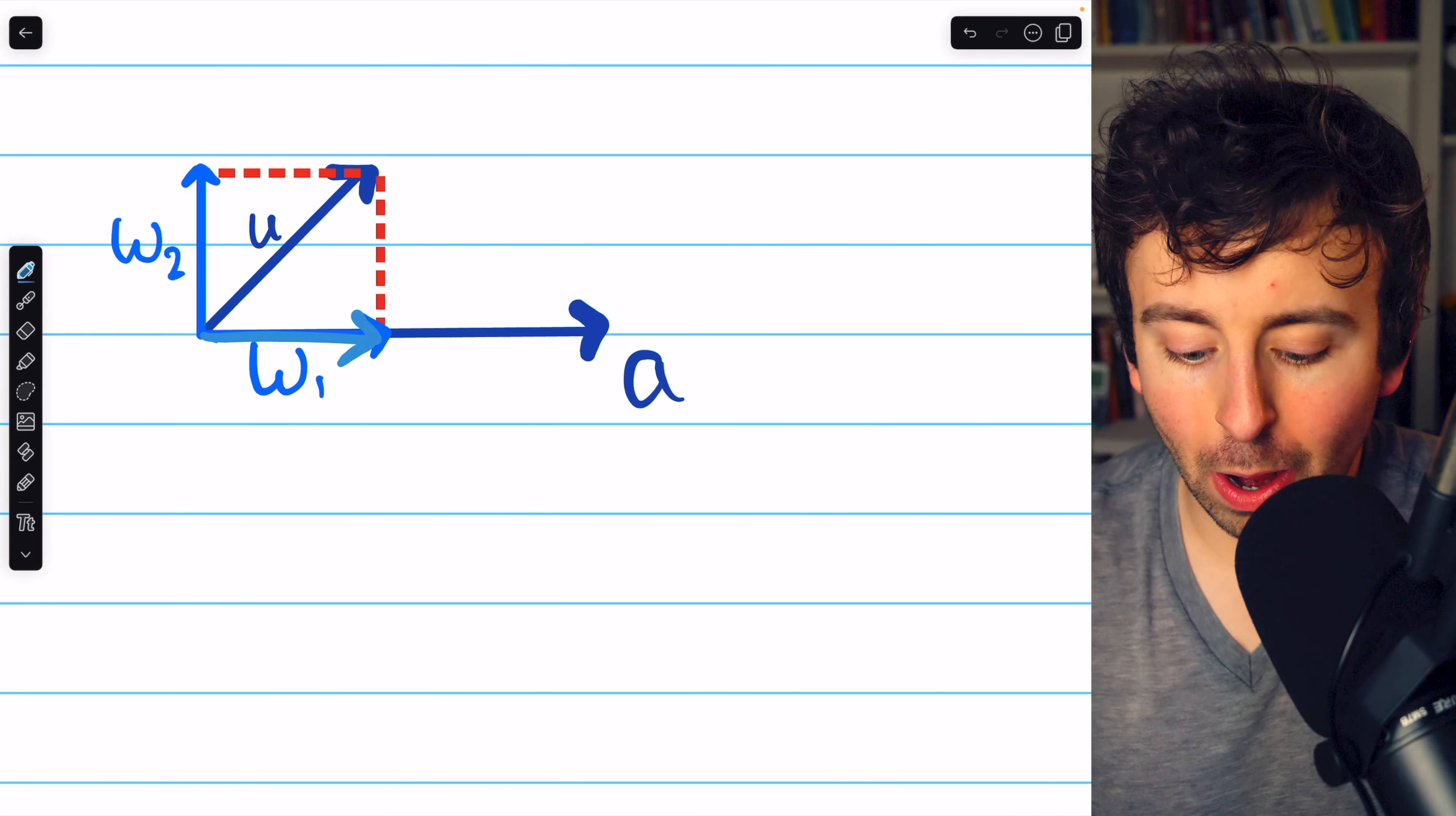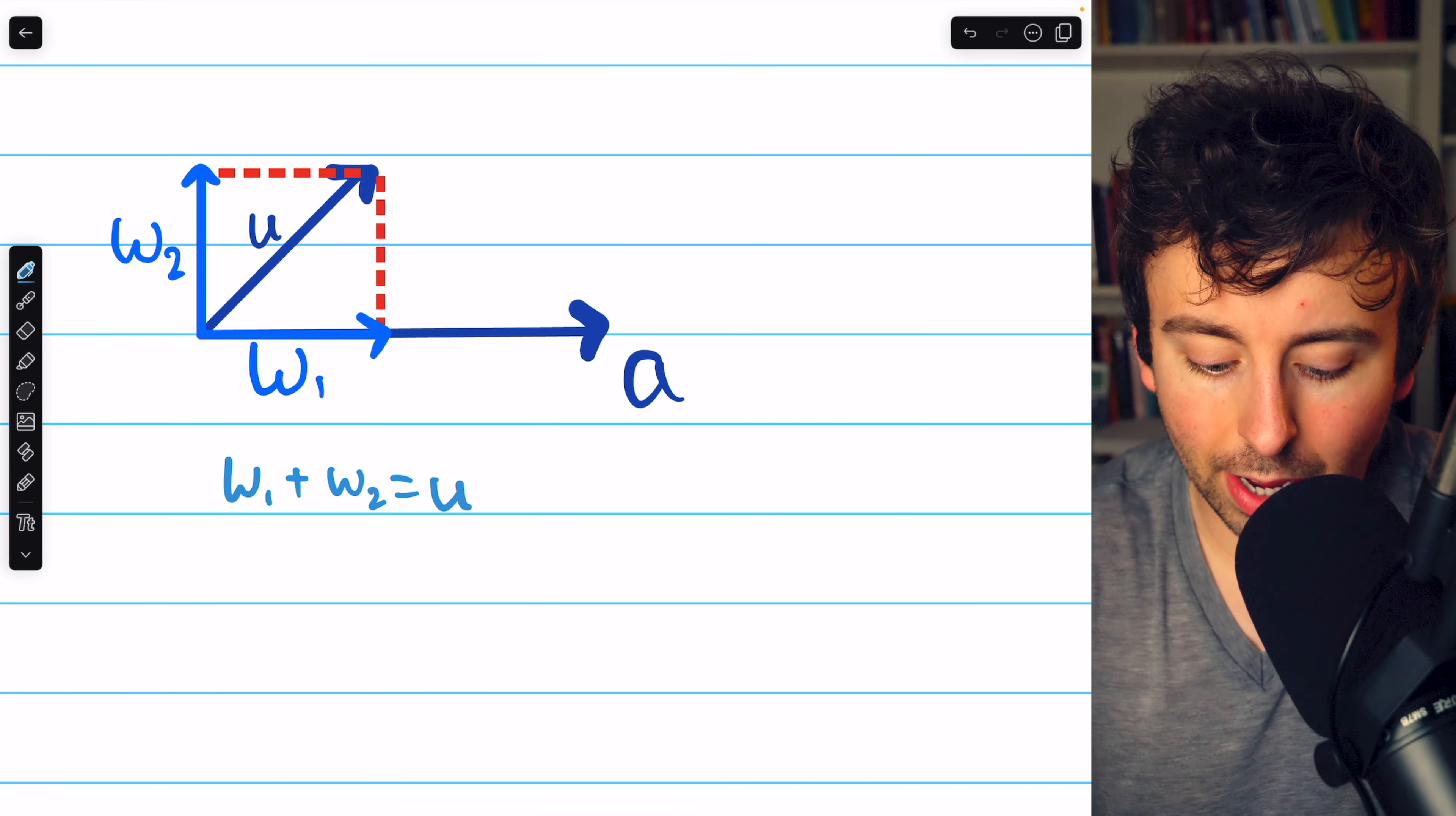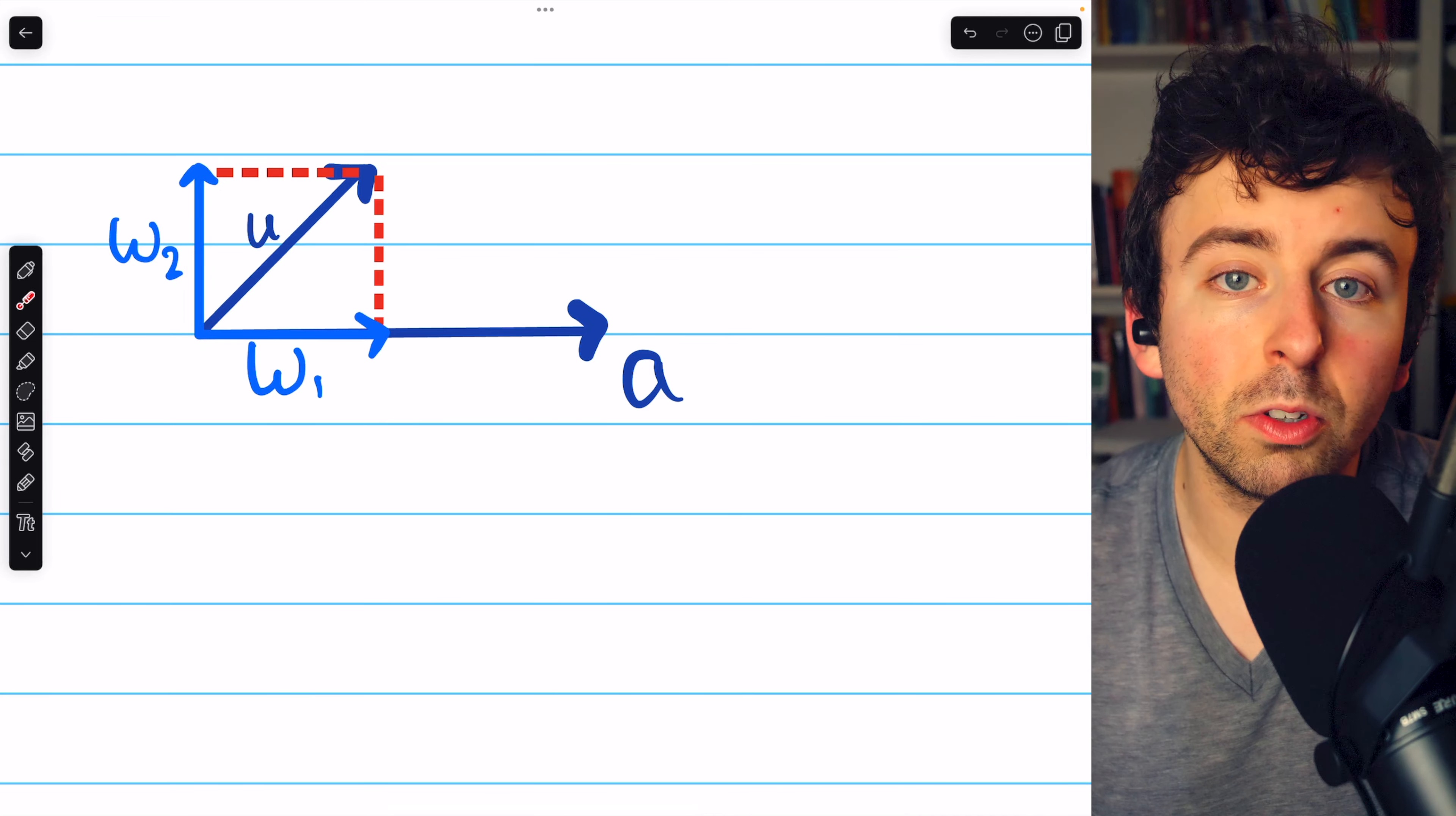Once we figure out its length, we can take the vector a and scale it down so that it has that length, and that would give us w1. And then since w1 plus w2 equals our vector u, once we find w1 we can easily find w2 by just subtracting w1 from u. We'll find the length of w1 and then we'll be able to express this vector, and hence w2 as well.